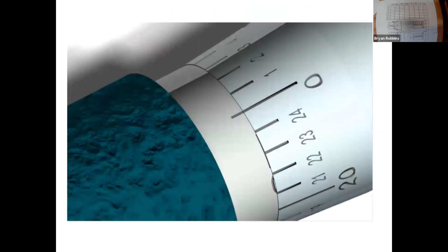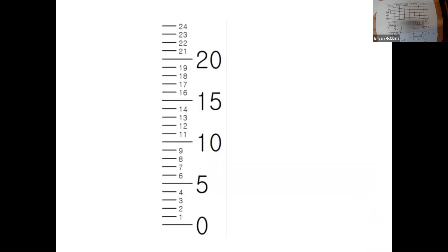Now, the other scale is the thimble scale, and you'll see that it starts at 0 and goes from 1, 2, 3, 4, all the way around to 20, 21, 22, 23, 24, and this would be the 25th. So, these are thousandths of an inch. So, if this says 1, this is 1,000th, .001. 5 would be .005. 17 is .017.